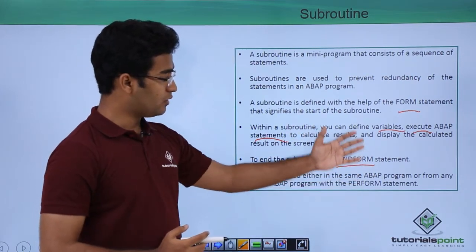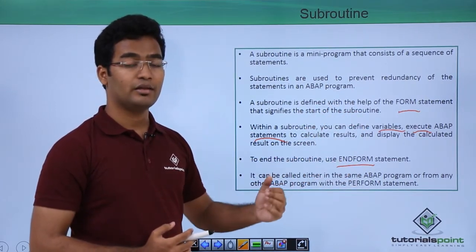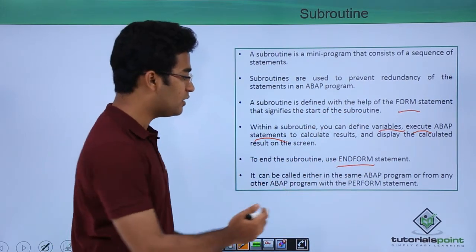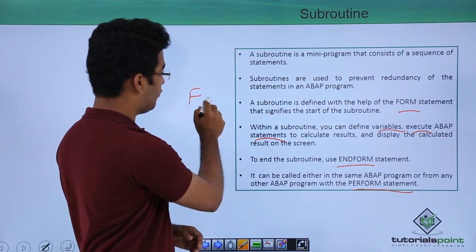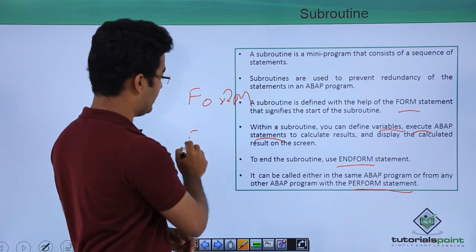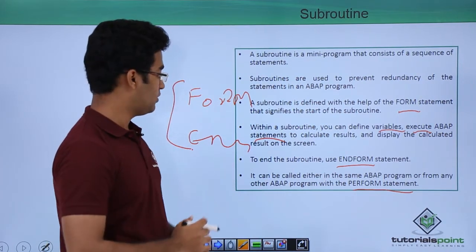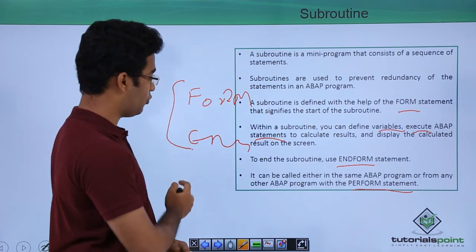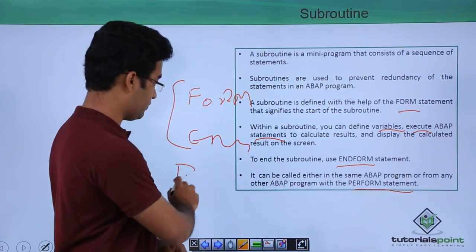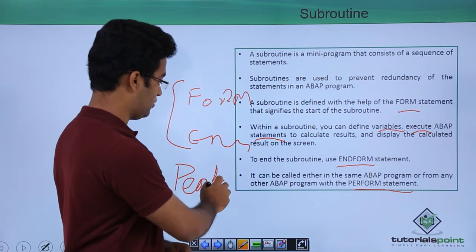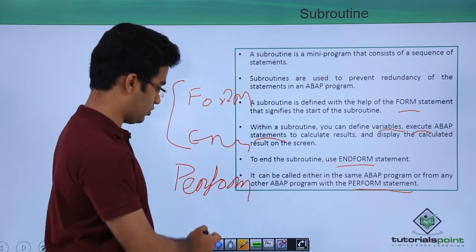FORM and ENDFORM make up the declaration part of a subroutine, and the implementation part is done with the help of PERFORM. So we have started our FORM and ended our FORM — this is our declaration part. If we have to call this subroutine, we use the PERFORM statement, which implements the subroutine.